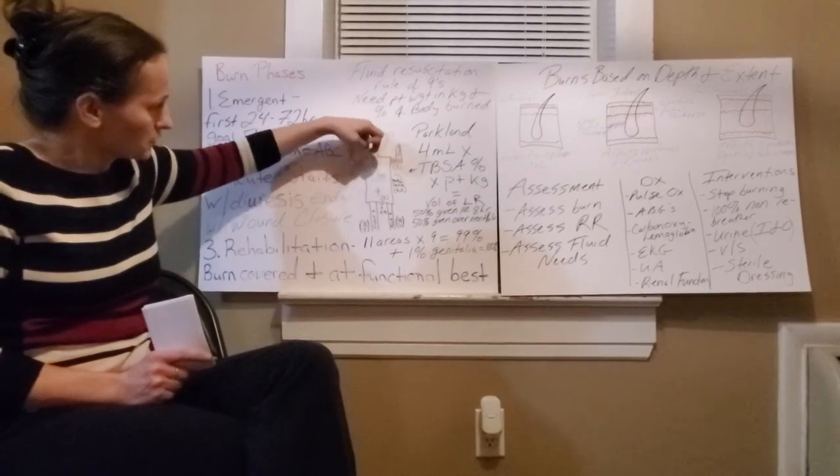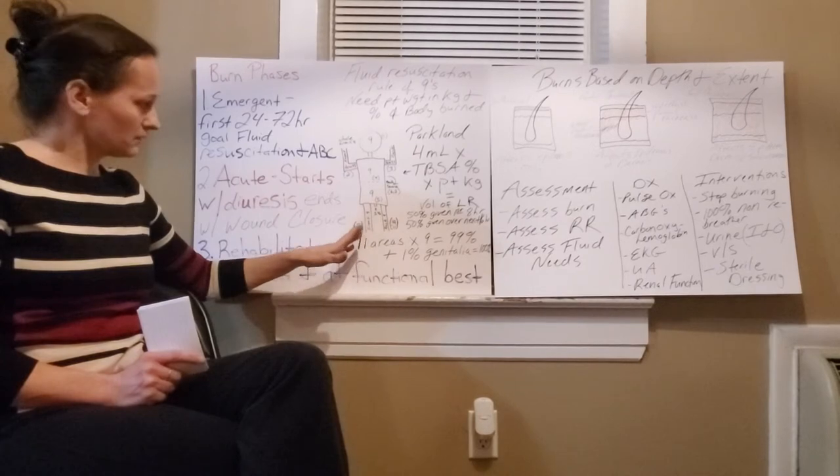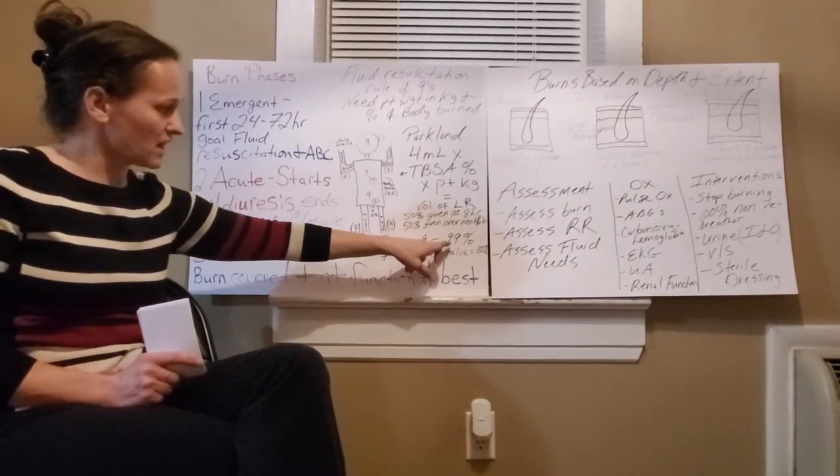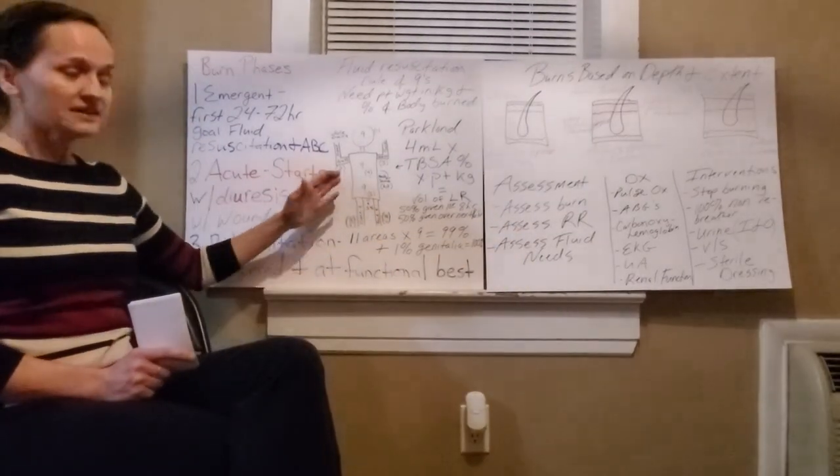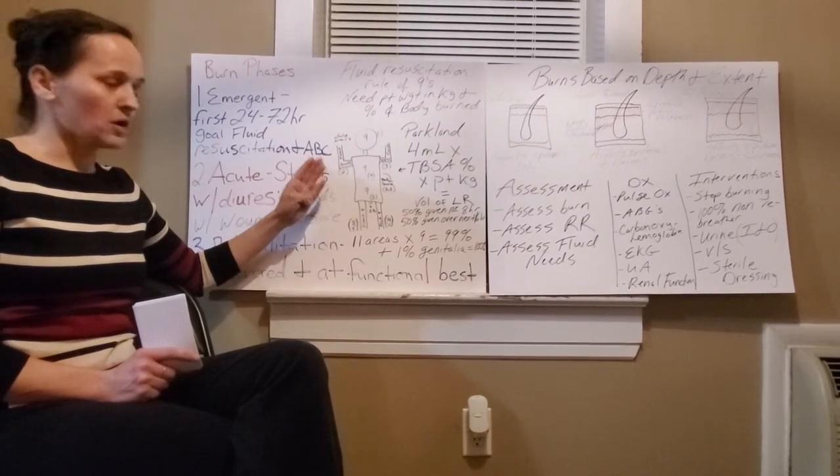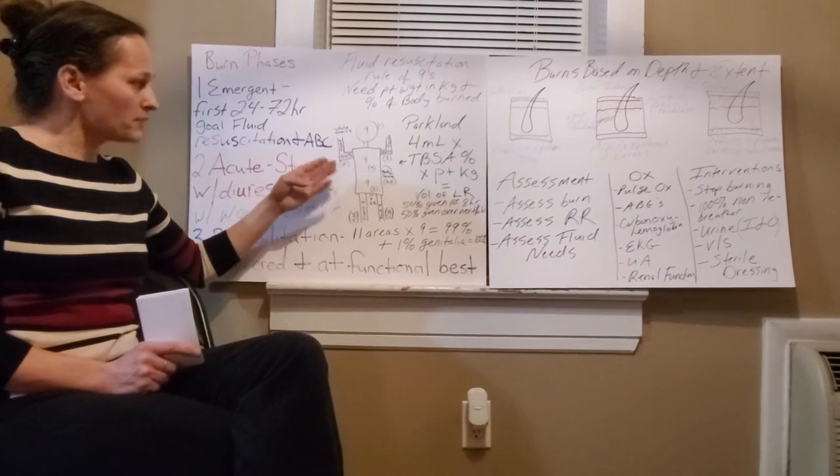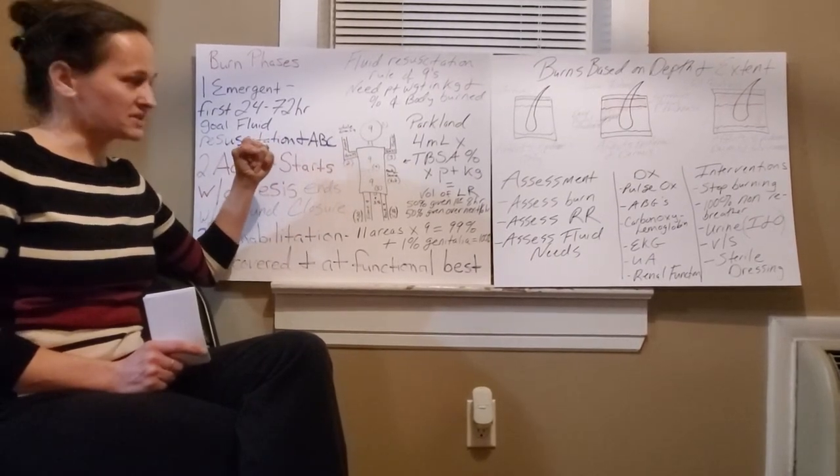1, 2, 3, 4, 5, 6, 7, 8, 9, and 10, 11. And 11 areas times nine equals 99. And your 1% for your genitalia gives you 100%. This would be a good picture to draw for your test, so you know if they give you a patient what areas are burned. You can figure out what percent it is, and that way you can do your math on the fluid resuscitation.